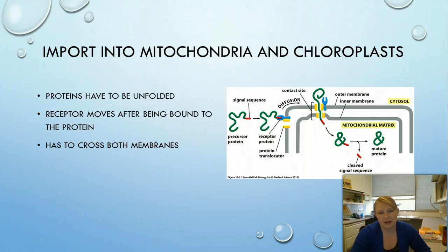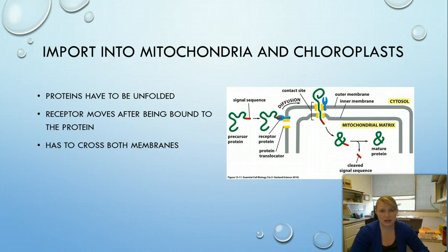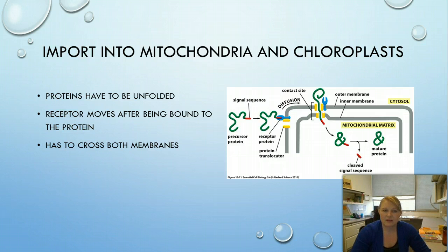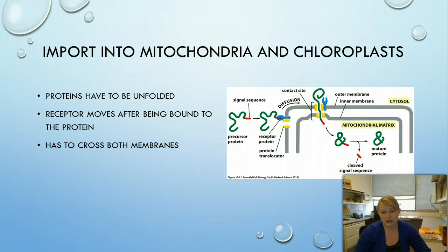Now let's talk about importing proteins into mitochondria and chloroplasts. Almost all the genes for their proteins are made in the nucleus, transcribed into mRNA, exported to the cytosol, made into proteins, and then imported. The first step is that the protein must be unfolded — it's never in its native conformation. That signal sequence binds to a receptor protein, which moves across the membrane until it finds a contact site. Once found, the protein is threaded through a pore-like structure into the organelle. Inside, the signal sequence is cleaved and the protein folds properly to begin its function.